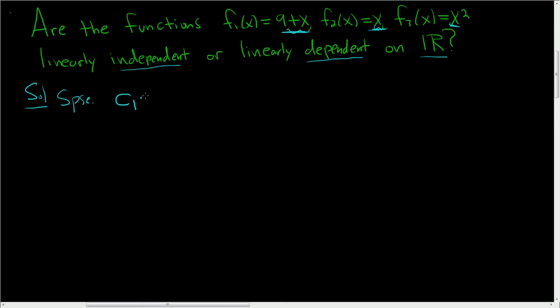Well it's c sub 1 times 9 plus x. Here c sub 1 is a number plus c sub 2 times x plus c sub 3 times x squared. And we suppose that this is equal to 0 for all x in the set of real numbers and some arbitrary c sub 1, c sub 2, c sub 3 in R.